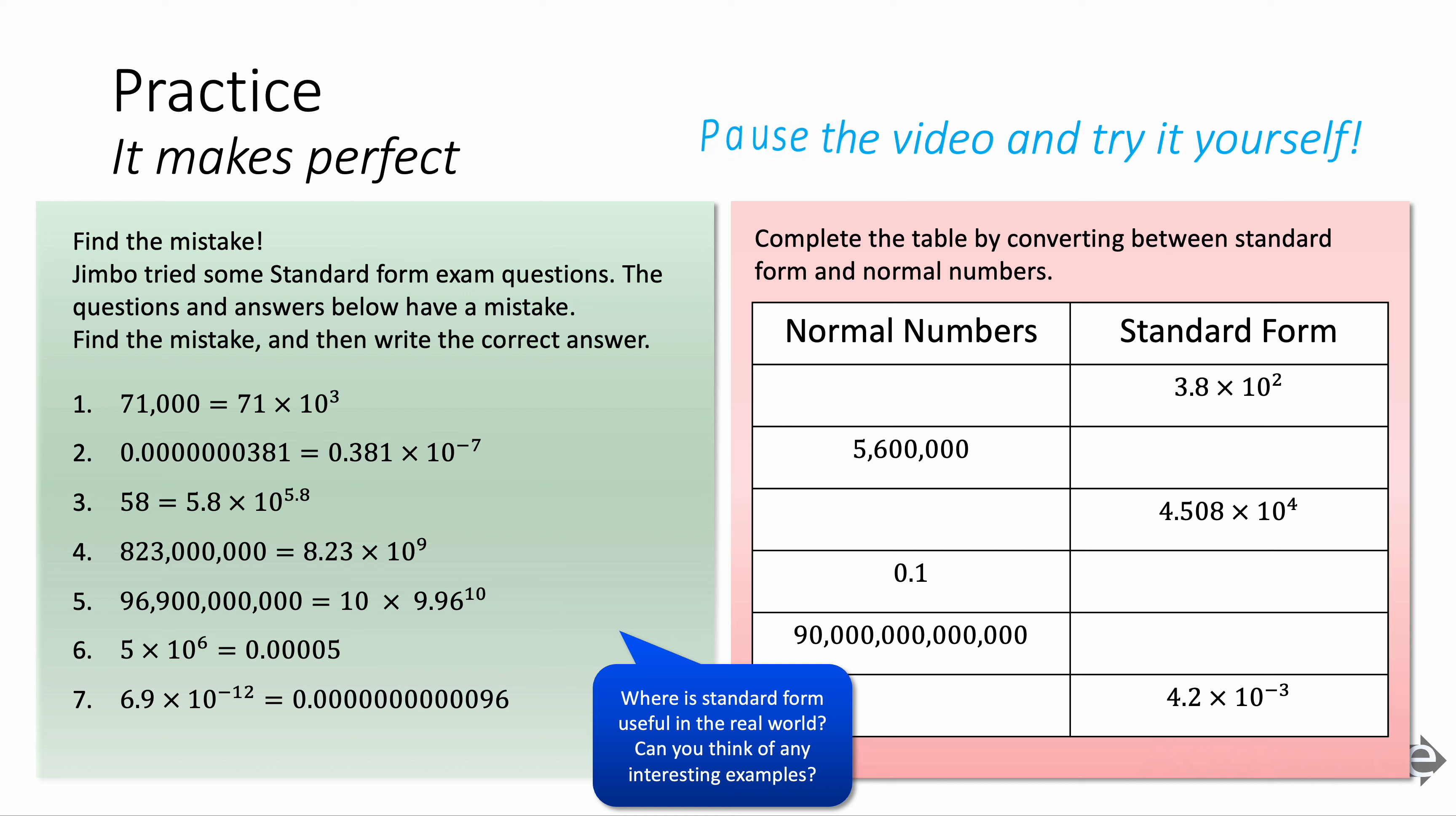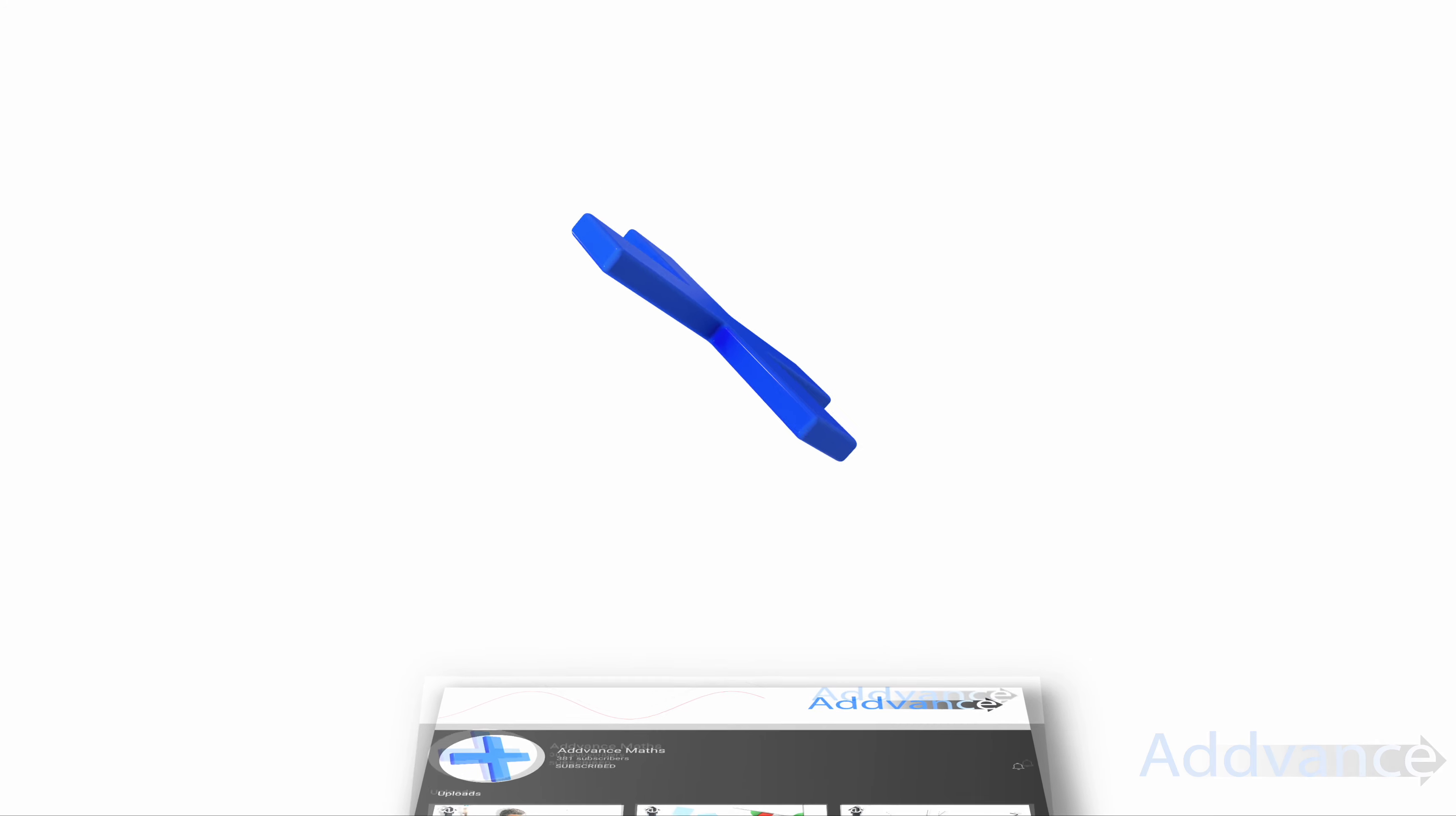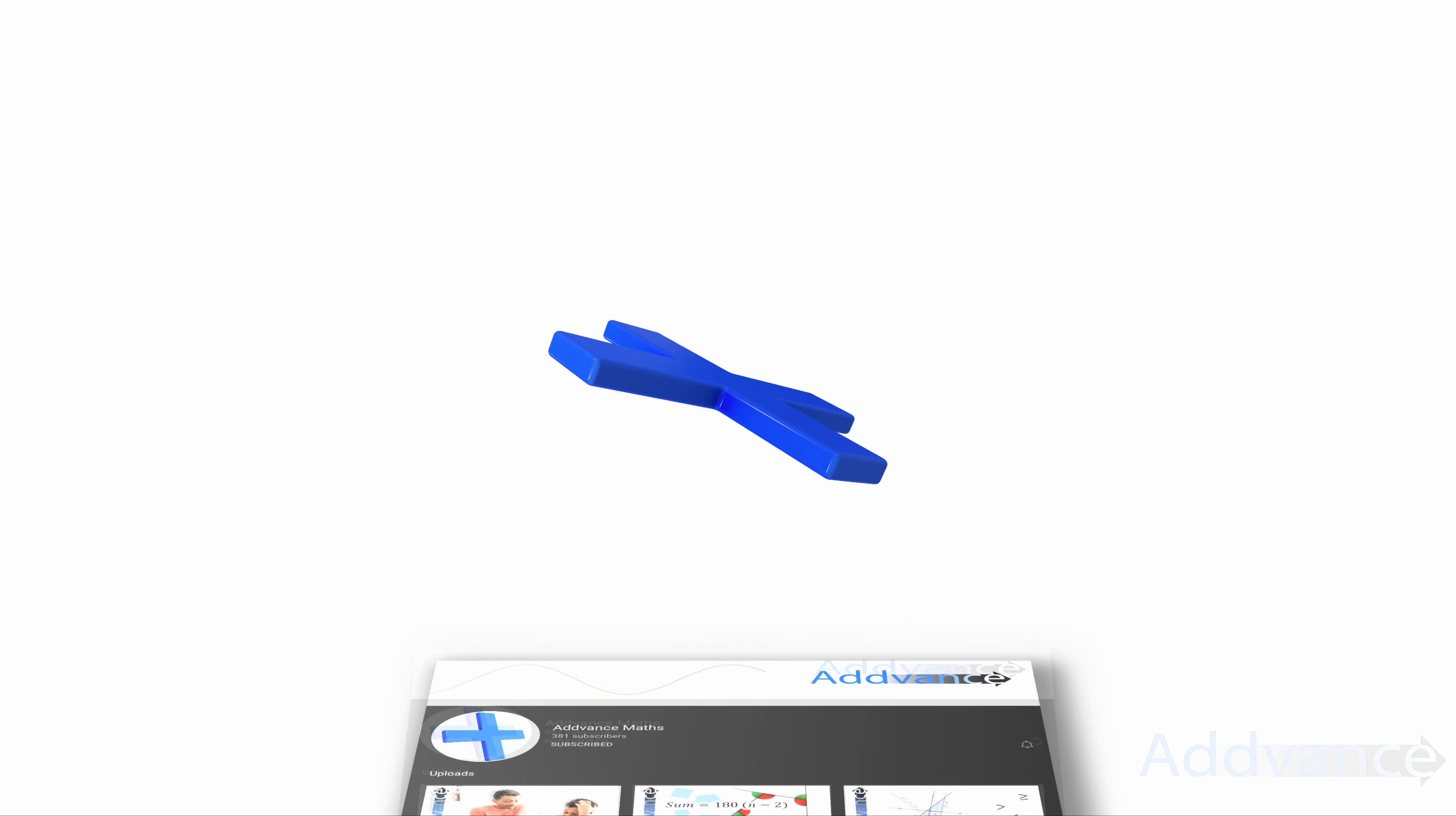So you've got some practice questions for you to try here if you're ready. So try to spot the mistakes that Jimbo has done on the left, and then on the right, you can try converting these yourself. So pause the video now and try to find the mistakes Jimbo has made, and then try to also convert them into normal numbers or standard form. It should take you about five minutes.